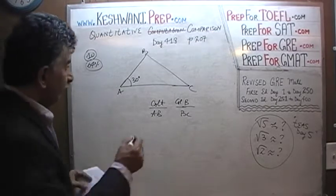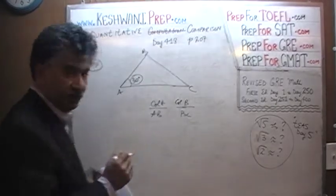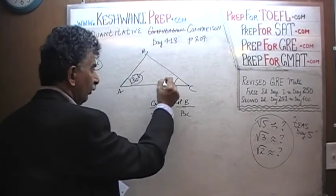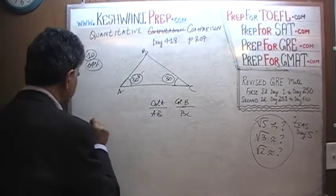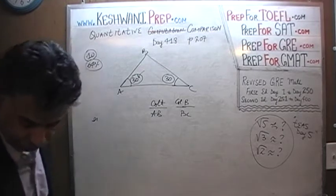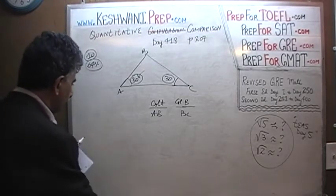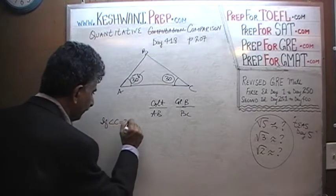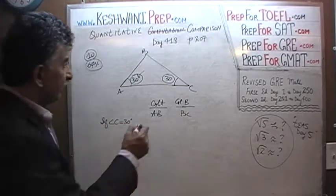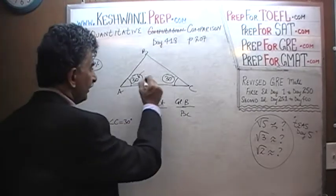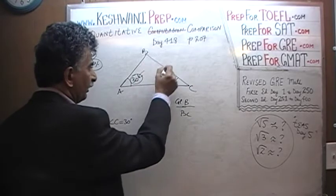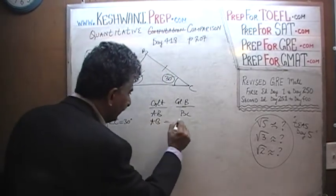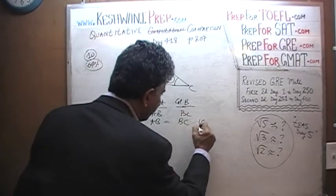Well, if angle A is 30 degrees, and if it turns out that angle C is also 30 degrees — if angle C is 30 degrees, then this is an isosceles triangle, so this side will equal this side. In that case AB will equal BC, and the answer will be C.